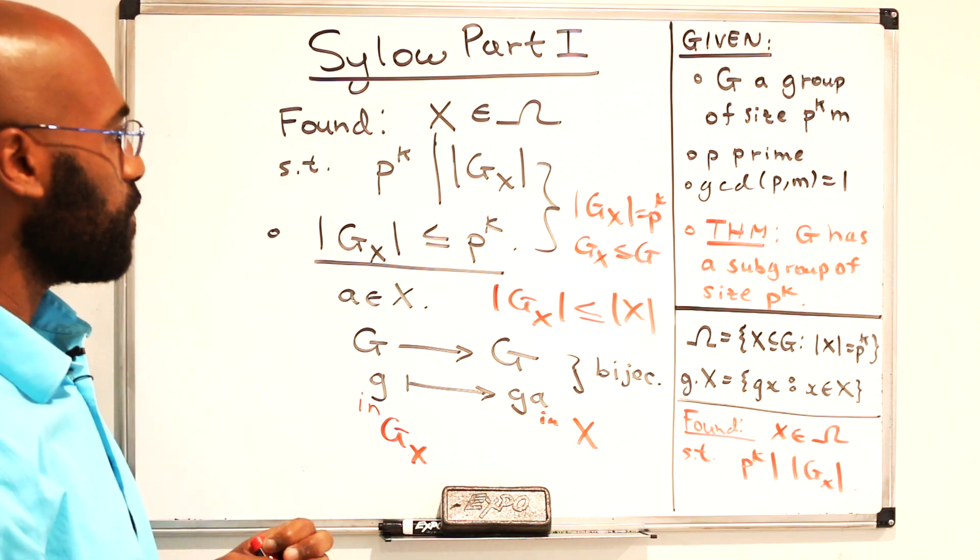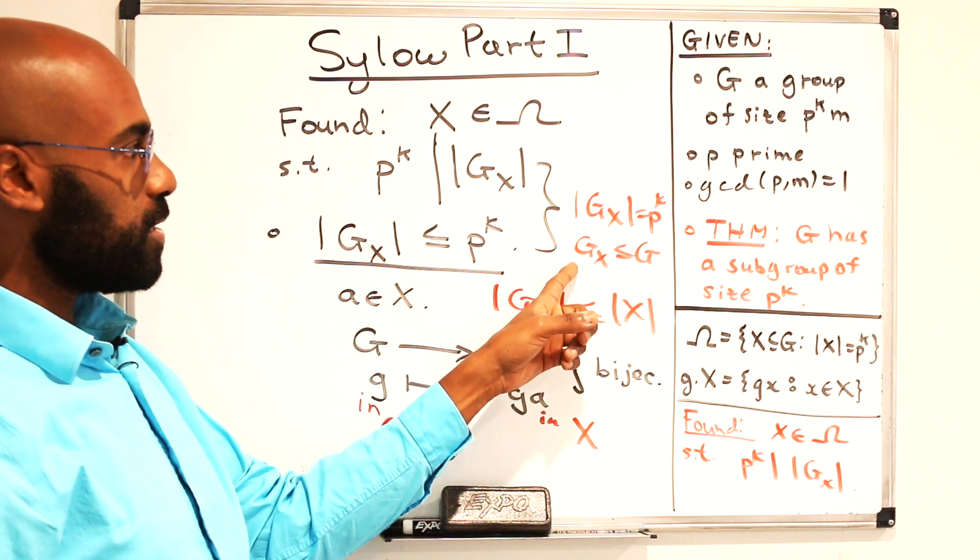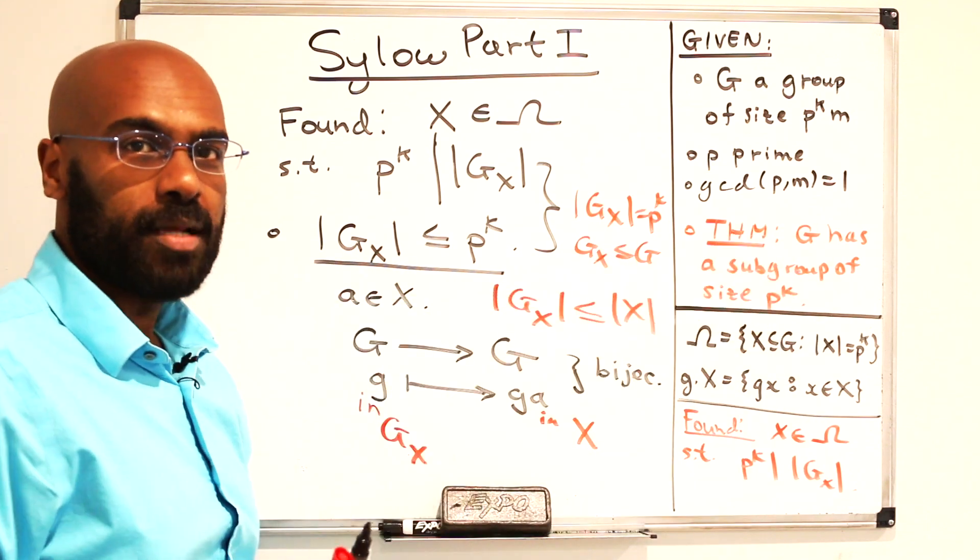Great. So we put everything together. We do get indeed that the stabilizer is a subgroup of the size that we want.